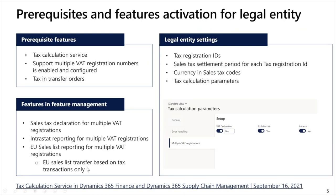In the legal entity with multiple VAT registrations, you will need to create VAT IDs for each tax registration. For each VAT ID, you need to create a sales tax settlement period and tax authority. You also need to create sales tax codes for each VAT ID and define the currency of VAT reporting for each sales tax code. This all relates to features for multiple VAT registration numbers. Here is the link to the demo recording of the Tech Talk where there is more information about how to configure the tax calculation service and multiple VAT registration numbers features.